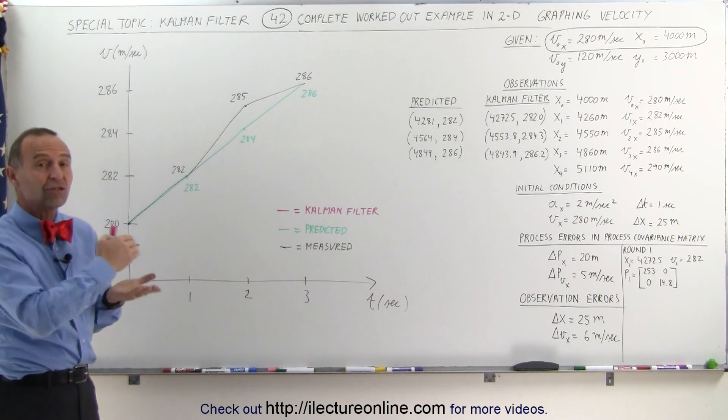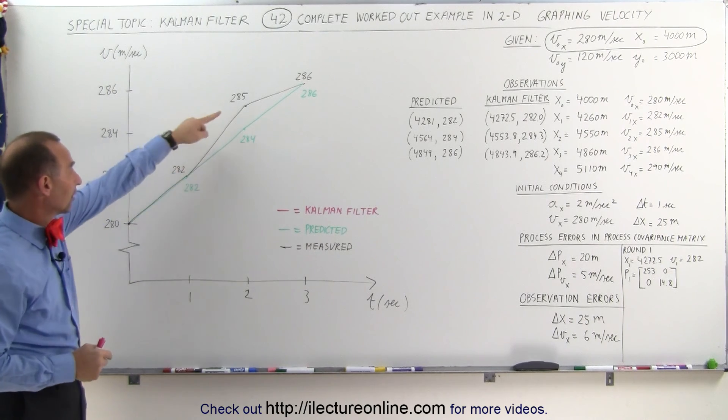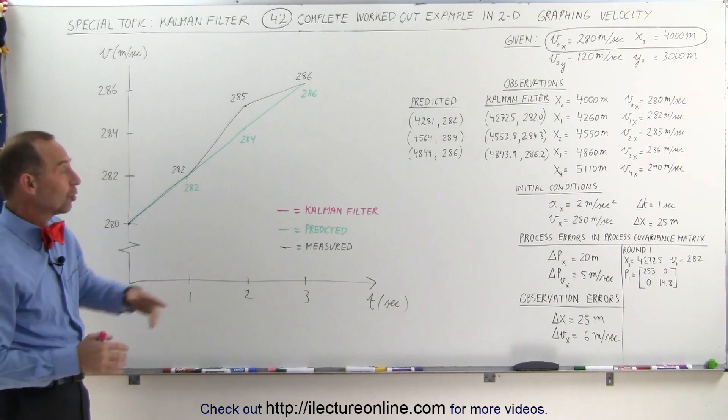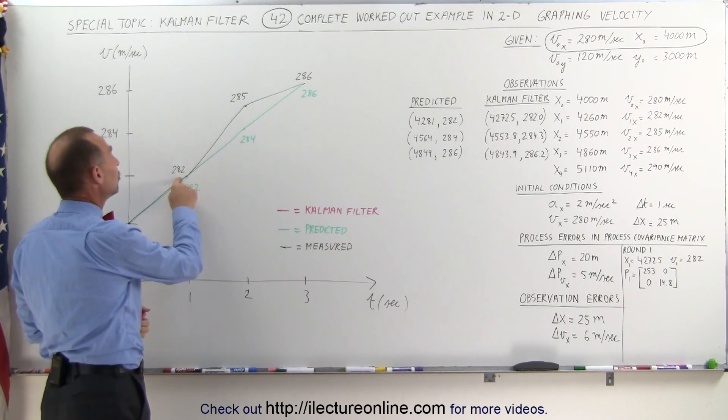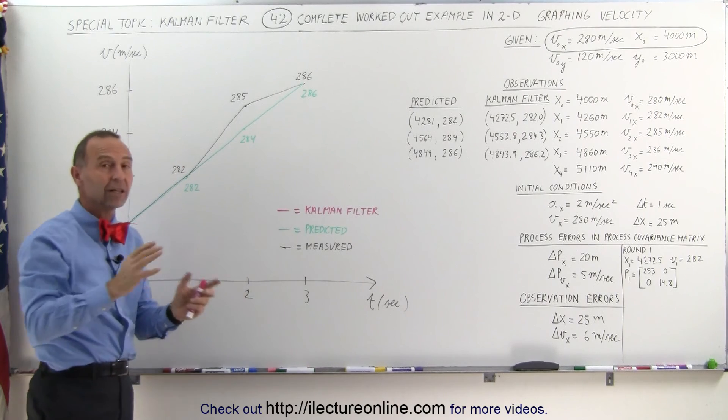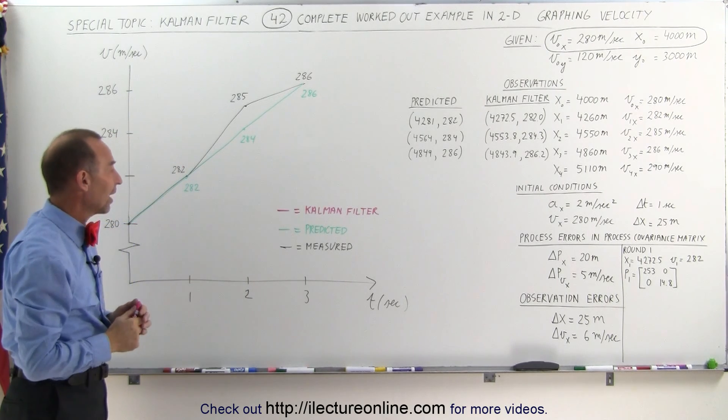We're tracking an airplane in position and velocity. The black data points are measured values. Notice the measured values are kind of erratic. It went from 280 to 282 to 285 and to 286, so there's definitely a lot of variation in the measured values.